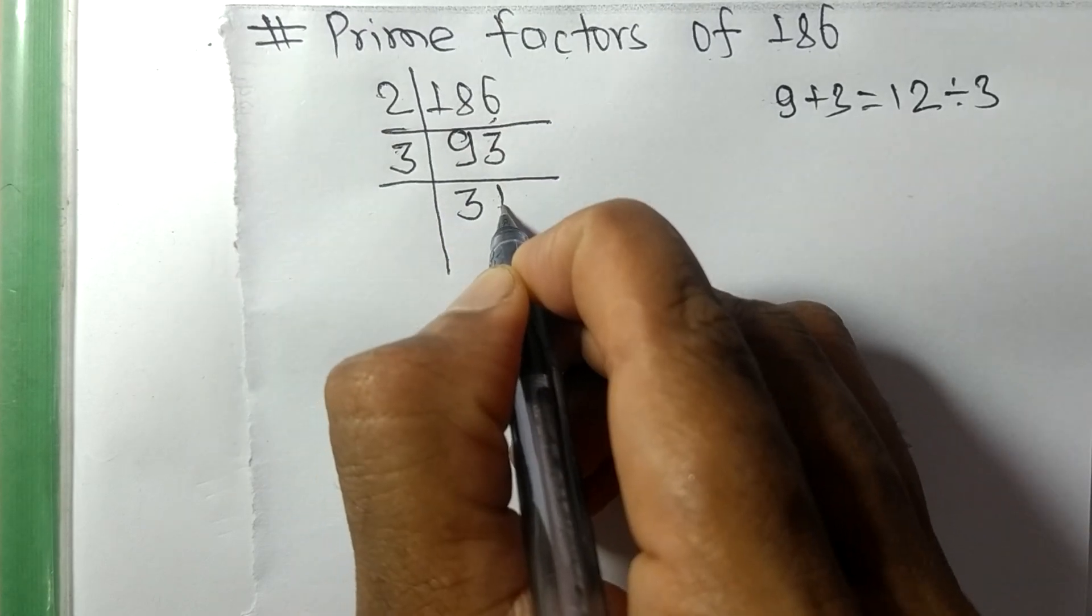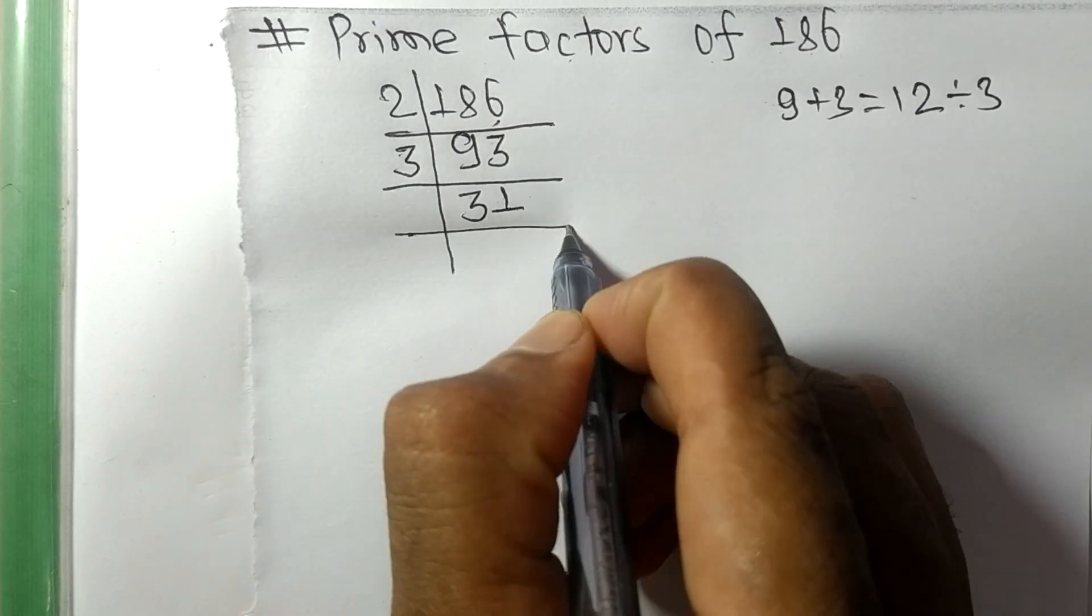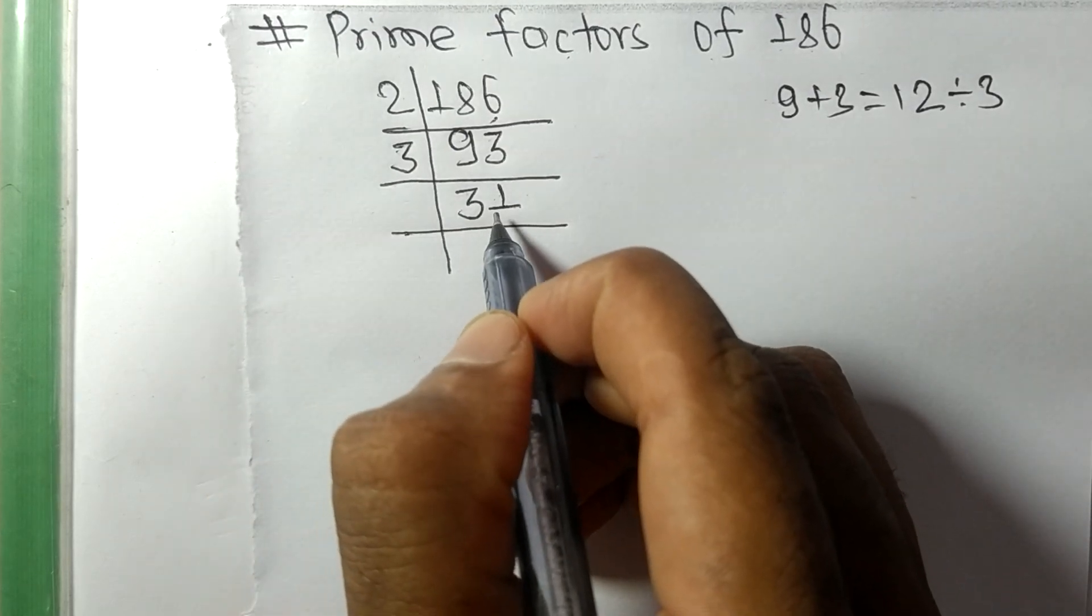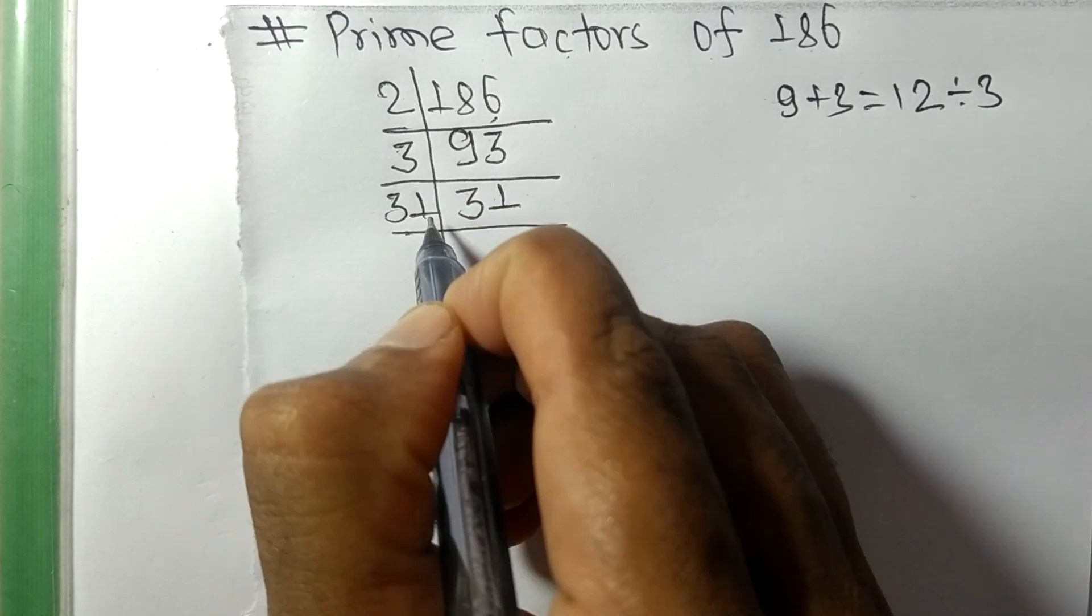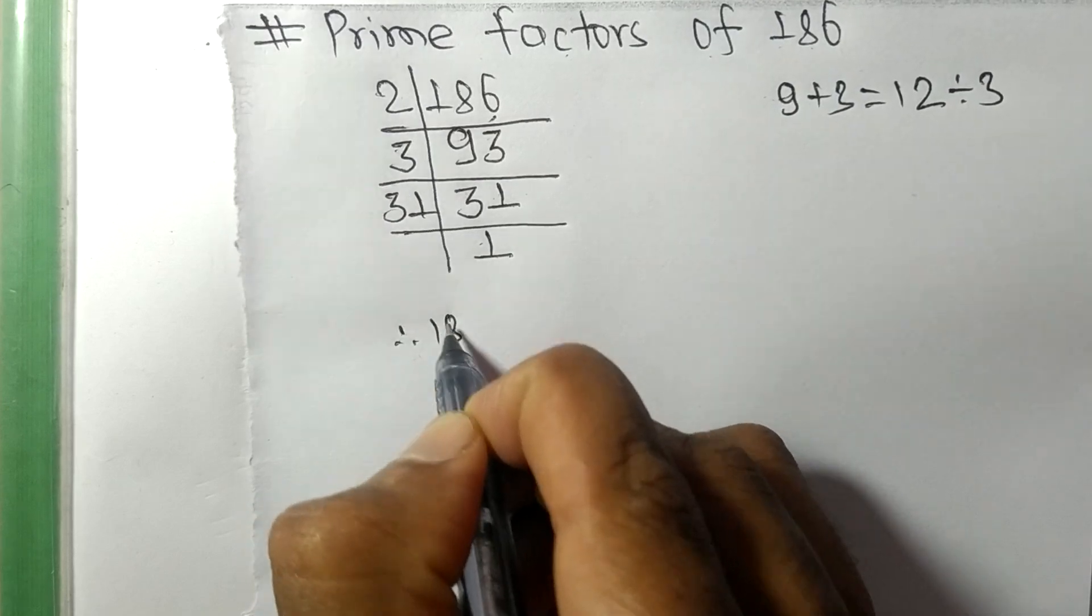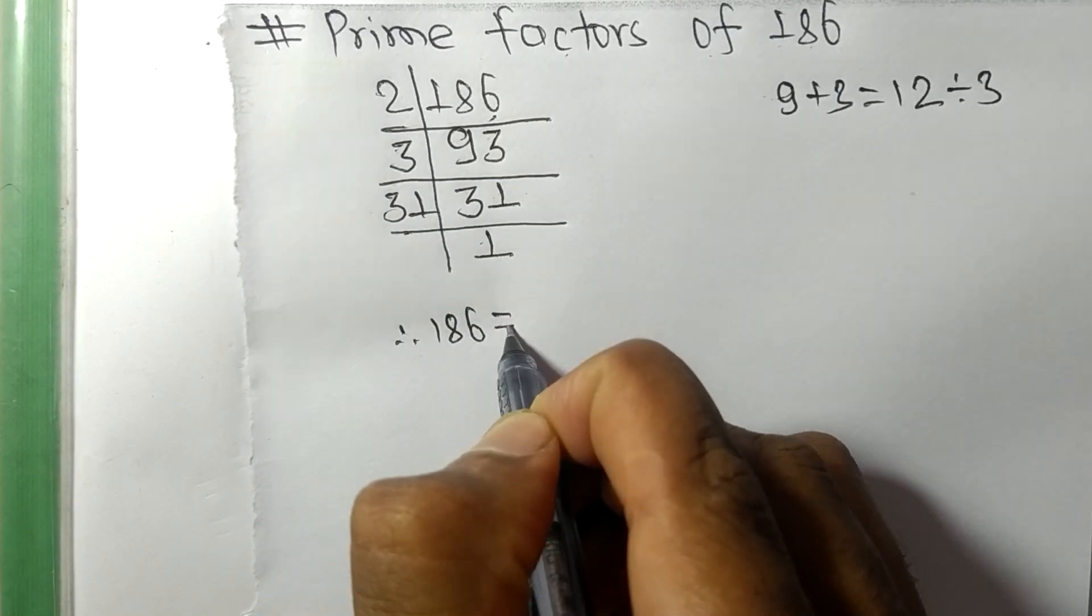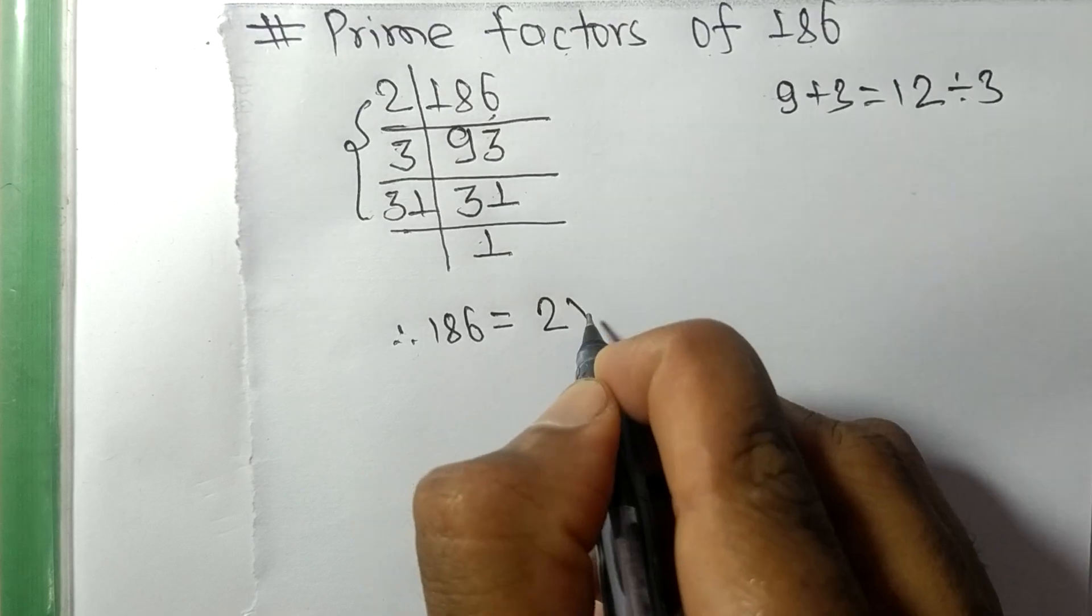So now we have 31, which is a prime number, so it is divisible by 31 itself and we get 1. So 186 is equal to 2 times 3 times 31.